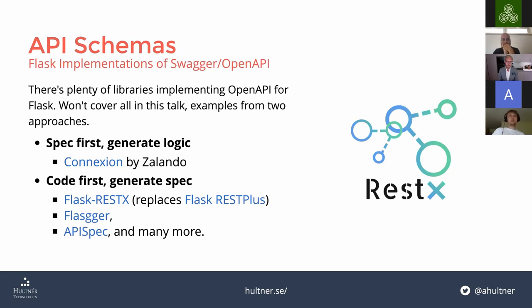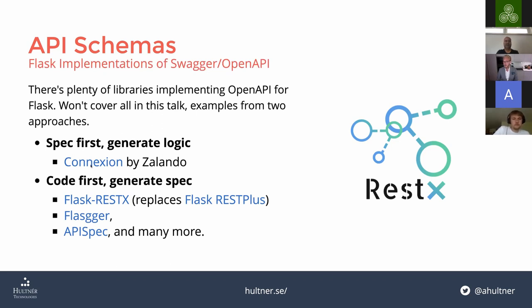I've mainly used Flask-RESTX myself — it was previously named Flask-RESTPlus. I use it for some of the samples here. It uses the older 2.0 version of OpenAPI/Swagger, so there are some features you can't use with it, but it's a very good option. There's also Flasgger, APISpec which uses Marshmallow to generate schemas, and a spec-first option where you write the spec first and generate your routes and validation from that.